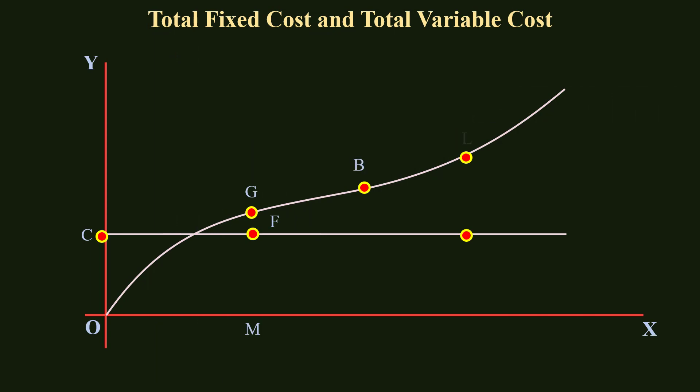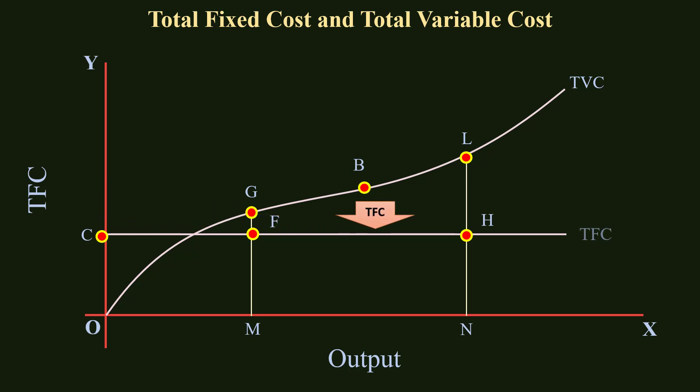First, state your justifications for the Total Fixed Cost Curve. Expenditure incurred on fixed factors like machinery and building is called Total Fixed Cost. In the short run, since the fixed factor is constant, the fixed cost is also constant. It doesn't change with output. Fixed cost exists even when output is zero. In the figure, TFC is the Total Fixed Cost Curve. It is horizontal and parallel to the X-axis.